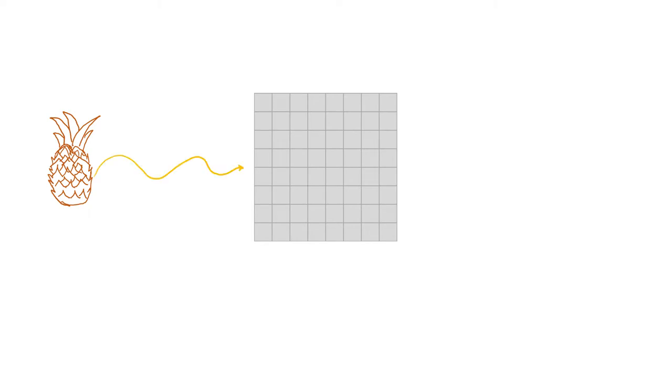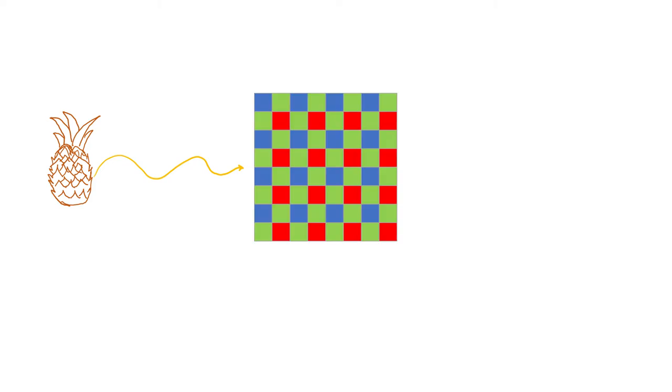Before the photons hit the sensor and create a current, they go through a filter, a physical color filter, called the color filter array. So in that sense, there is no such thing called no filter if you're using a digital camera. All those pictures tagged as no filter on Instagram, that's a big lie.